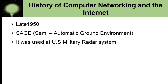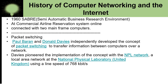In the late 1950s, the first network was SAGE — Semi-Automatic Ground Environment — a network model used by the US military radar system. Then in 1960, SABRE — Semi-Automatic Business Research Environment — was designed as a commercial airline reservation system online, connected with two mainframe computers.